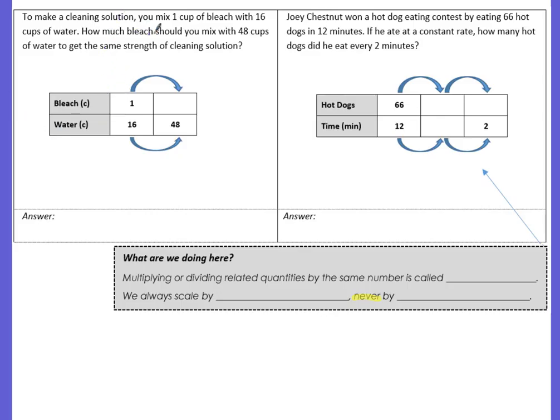To make a cleaning solution, you mix 1 cup of bleach with 16 cups of water. How much bleach should you mix with 48 cups of water to get the same strength of cleaning solution? So we want to keep the ratios the same. We have a ratio of 1 cup of bleach to 16 cups of water. Keeping it the same, if we have 48 cups of water, how much bleach do we need? So this is our ratio table and we're wanting to find this unknown amount right here.